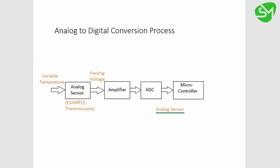This is the analog to digital conversion process. Taking the example of a thermocouple: the temperature is read by the analog sensor, which converts the temperature into a respective voltage and feeds it to an amplifier. Since this voltage is very low — available in millivolts — the amplifier boosts it to a readable voltage for the microcontroller. This voltage is then fed to the analog to digital converter, which converts the analog signal to digital format. The digital output from the ADC is given to the microcontroller for further processing.